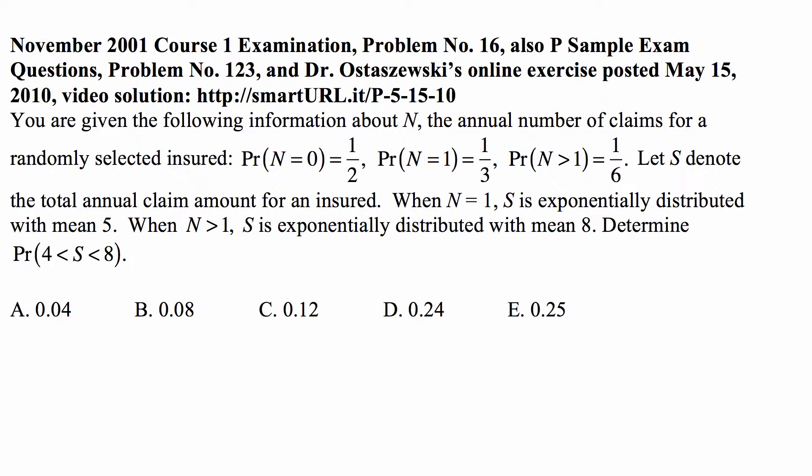Probability that N is 0 is one-half. Probability that N is 1 is one-third. Probability that N is more than 1 is one-sixth. Let S denote the total annual claim amount for an insured.